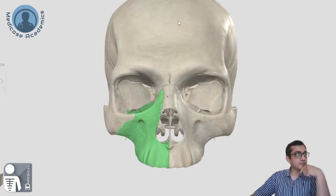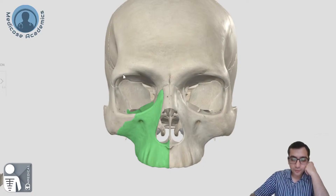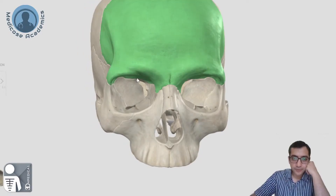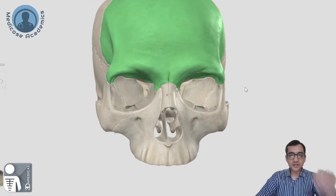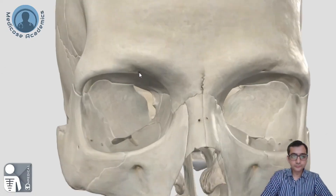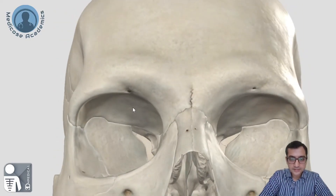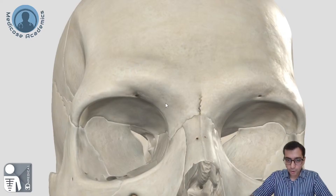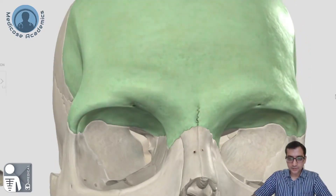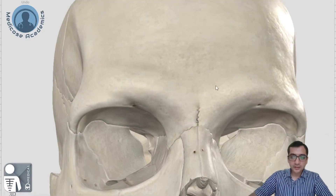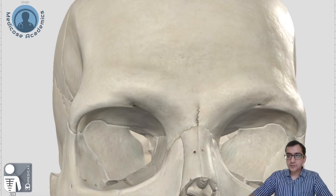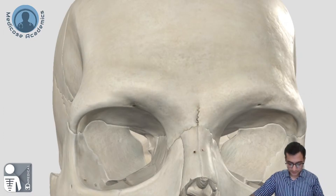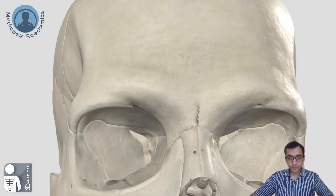The frontal bone has a flat surface making the upper margin of the supra-orbital region. Here you can see a dip — sometimes there is a foramen, sometimes a notch. If zoomed in, this is known as the supra-orbital foramen, or if there is a notch, it is the supra-orbital notch. It makes the upper margin of the orbit. The raised portions you can see are known as the superciliary arches.